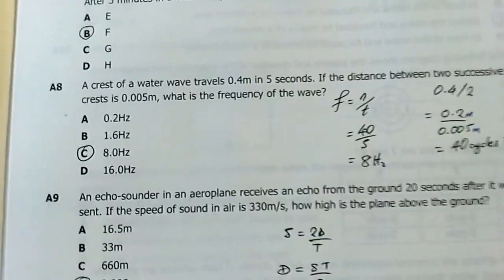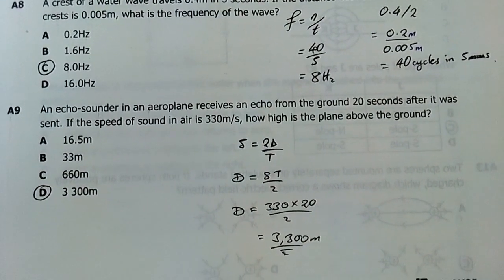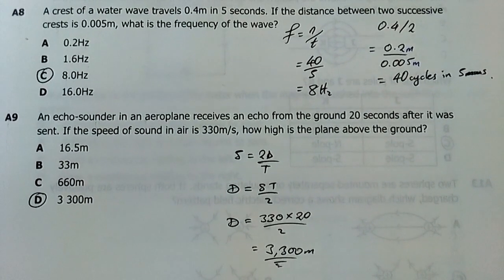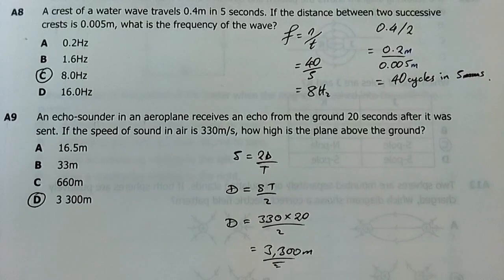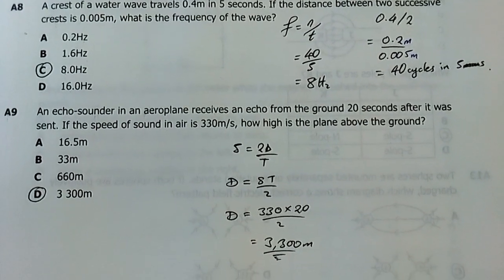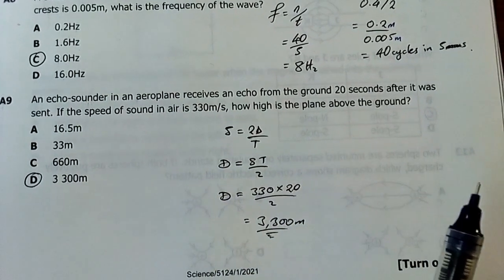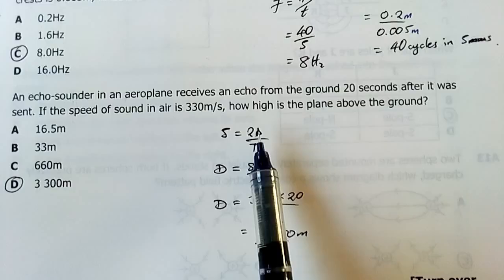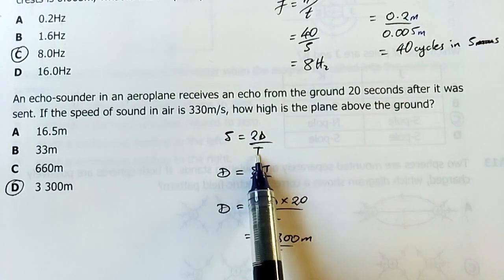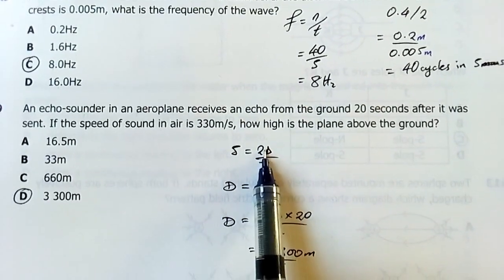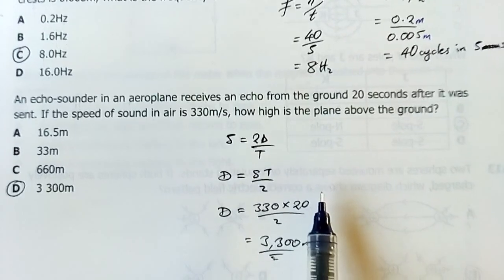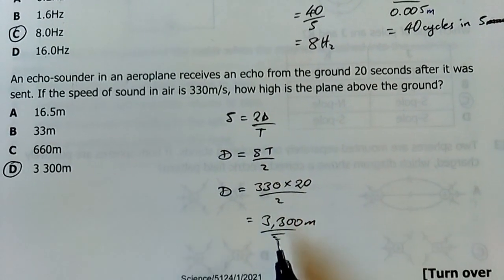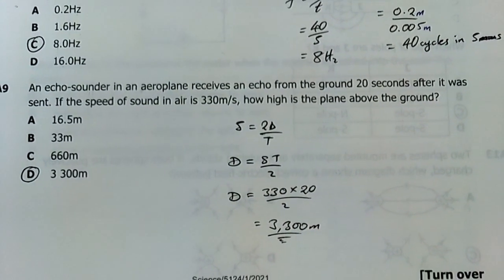Number nine: An echo sounder in an airplane receives an echo from the ground 20 seconds after it was sent. If the speed of sound in air is 330 meters per second, how high is the plane above the ground? My answer is D. When you're talking about echo and speed of sound, you're talking about sound going and sound coming, covering the same distance twice in the same time. So this time given is for going and coming. The distance is for going and coming too. So I make d the subject from this formula and my answer comes out as 3300 meters. My answer is D.